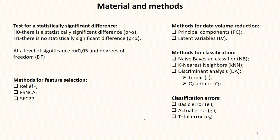A statistically significant difference was found for fabrics with the same fibers but different colors. Three methods were used to select features. The resulting feature vectors are reduced with principal components and latent variables. Three classification procedures were used. The Bayesian classifier was used as a reference. Basic, actual and total errors were used to evaluate the performance of the classifiers.